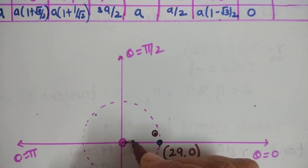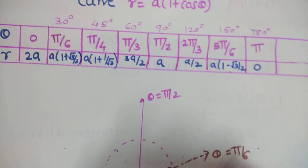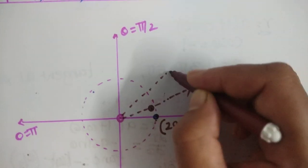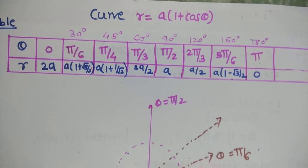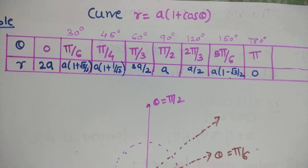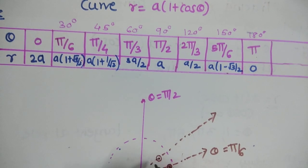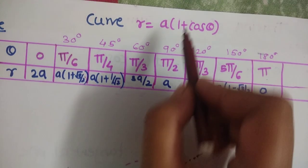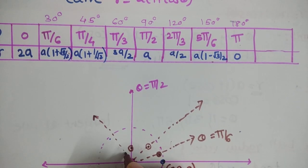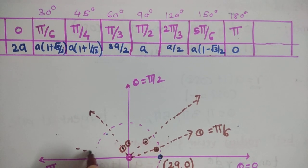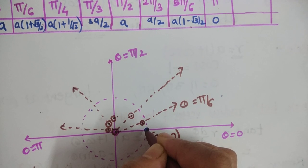At θ = 45°, the point lies within the circle with a smaller radius. At θ = π/3, r = 3a/2. Continuing for θ = 2π/3 and 5π/6, the radius keeps decreasing. At θ = 180°, r = 0. Drawing all these points with a smooth curve gives us the traced figure.